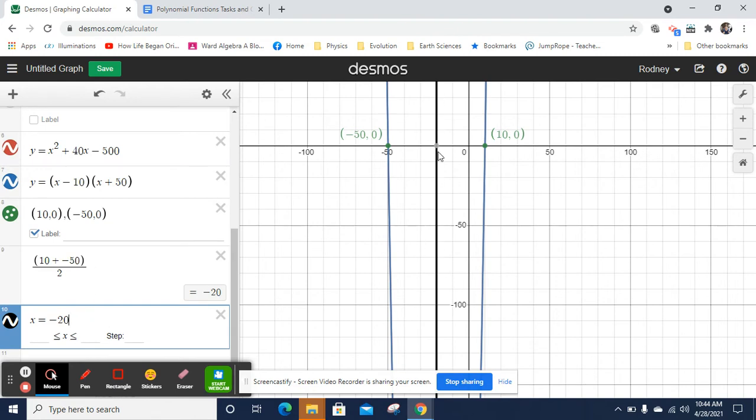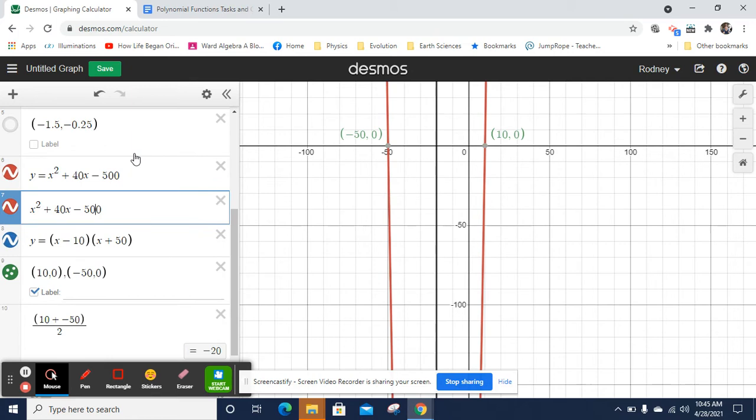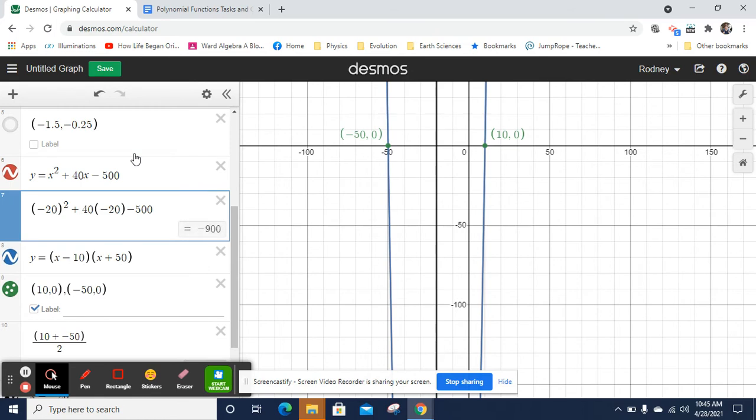But I haven't found the vertex. I could see where that intersects, but I want to find the vertex using negative 20. So what I can do is I can copy-paste my equation. And I'm going to replace x wherever it shows up with negative 20. And I get negative 900.